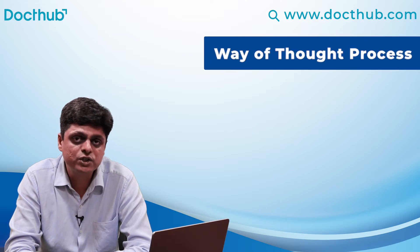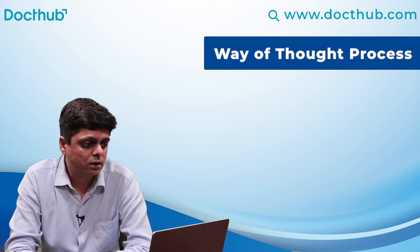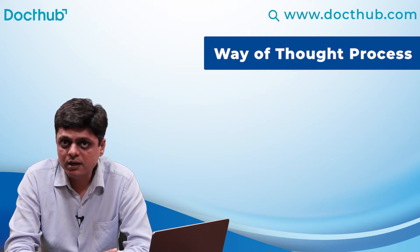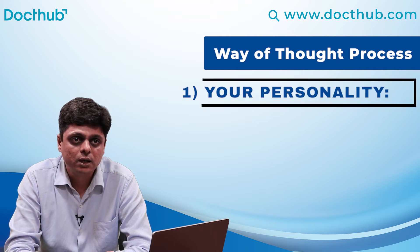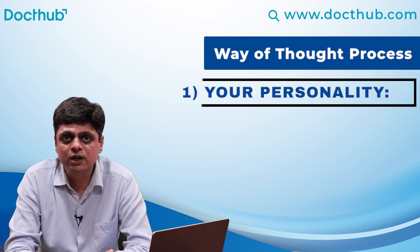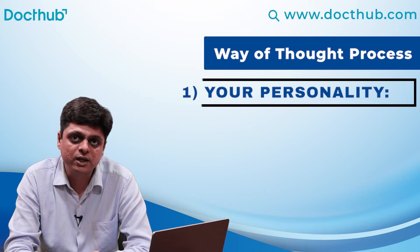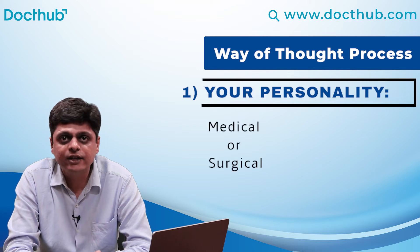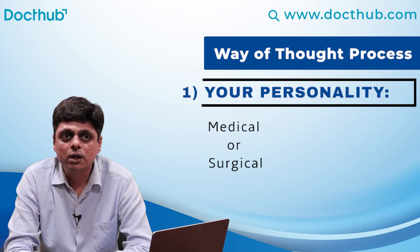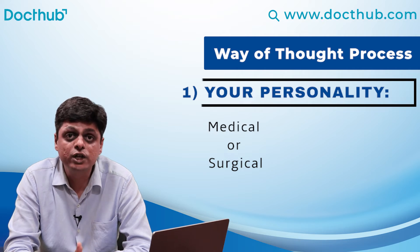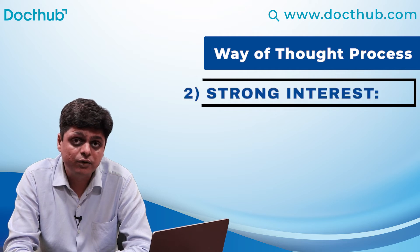What should be the thought process while choosing your medical specialty for post graduation, super speciality, or any further fellowships? There are four different aspects of thought process you need to have. The first is your personality — every medical graduate has a preference for either a medical or a surgical speciality. You need to identify and make clarity on that.